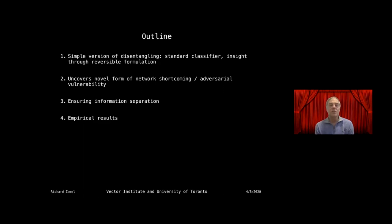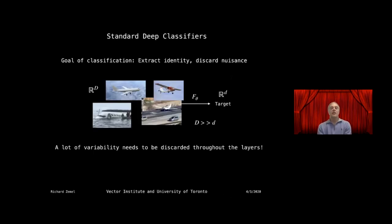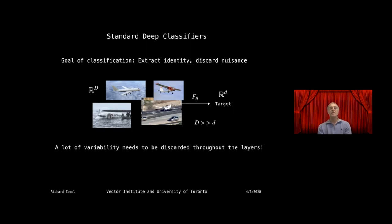Most of this work was done with my postdoc Jorn Jakobsen, who gets the credit for the good ideas. Starting with a standard classifier: the goal is to extract the identity — all images of airplanes get the same label — and discard nuisance variables like background, angle, and type. Our target dimensionality d is much less than input dimensionality D, so a lot of variability is discarded. One way to quantify this is mutual information — what information is left in output Y about input X.